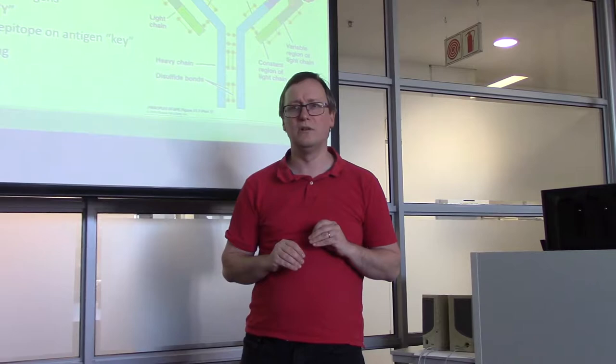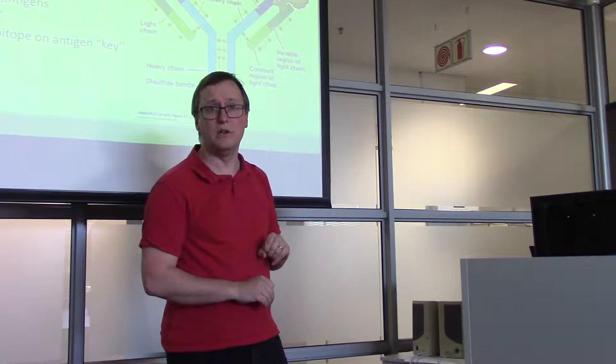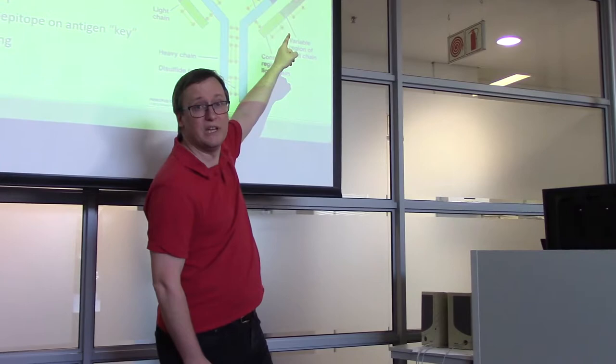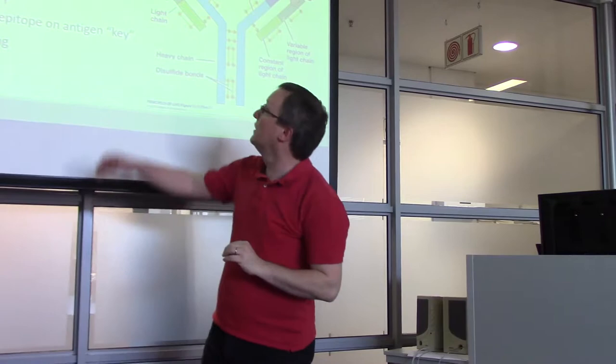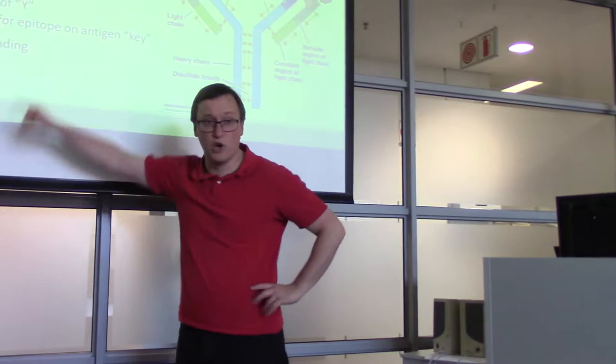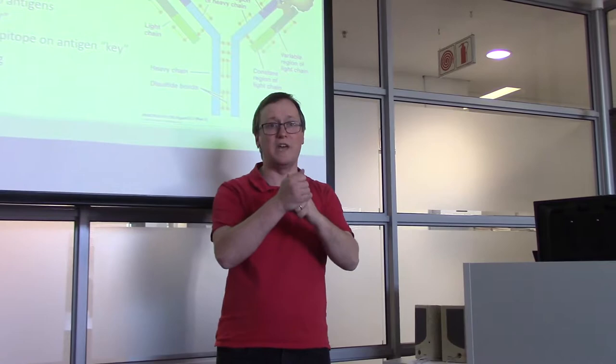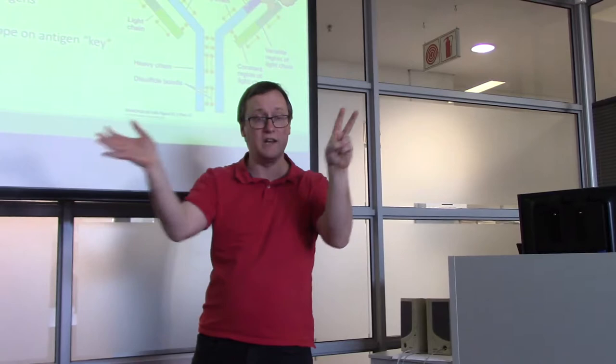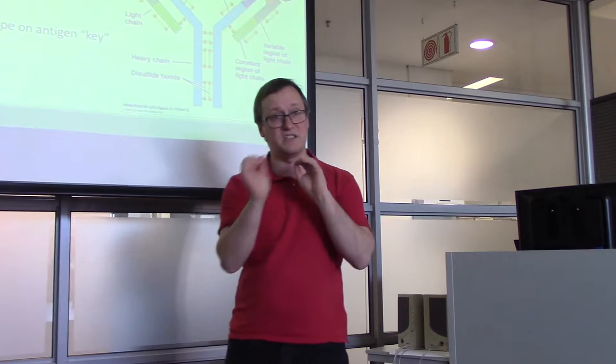We sometimes speak of an antigen and an epitope. The antigen is the thing that we're binding to. The epitope is the part of the antigen that we recognize. So an antigen has an epitope. The paratope, on the other hand, is the part of the antibody that actually links to that epitope. A paratope on the antibody connects to an epitope on the antigen, and that's what allows us to make this very specific recognition.